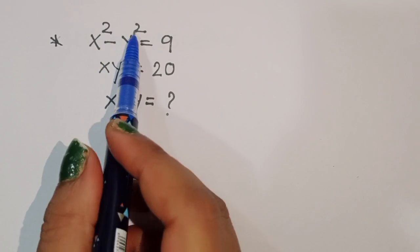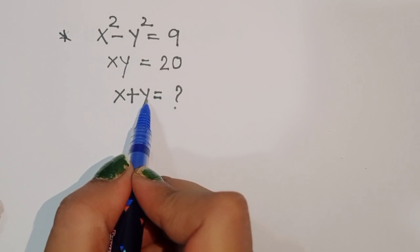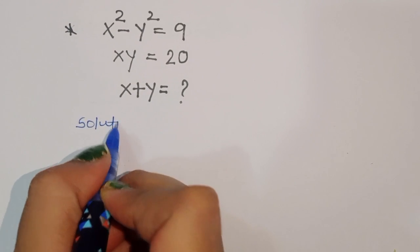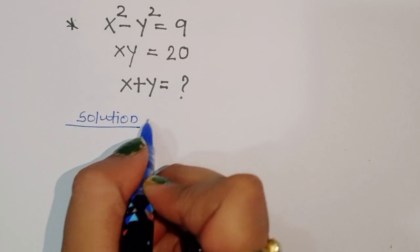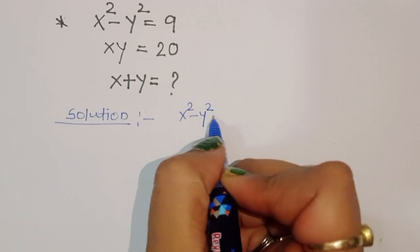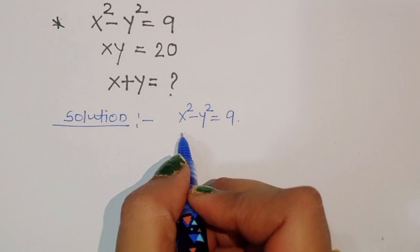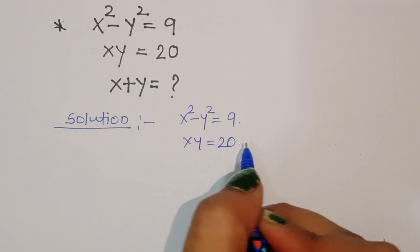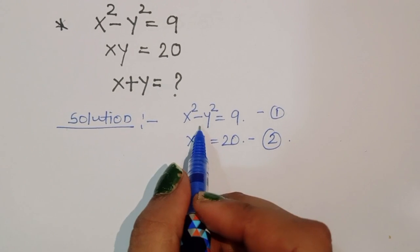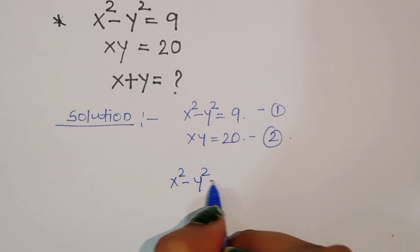The question is: given x squared minus y squared is equal to 9, and xy is equal to 20, we have to find out the value of x plus y. Let's see the solution. So x squared minus y squared equals 9 is equation number one, and xy equals 20 is equation number two.